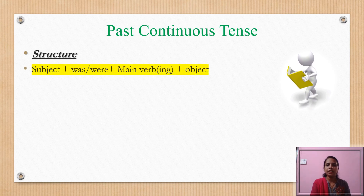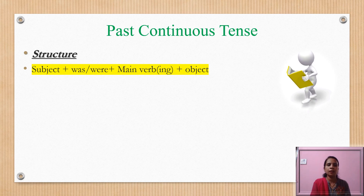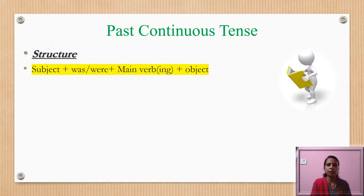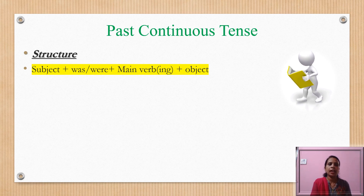The structure of past continuous tense is similar to present continuous tense. It is: subject, then two helping verbs — 'was' and 'were' — then the main verb with '-ing,' and then the object. In present continuous tense we use 'is,' 'am,' and 'are.' The only difference between the two tenses is the helping verbs: 'was' and 'were' in place of 'is,' 'am,' and 'are.'